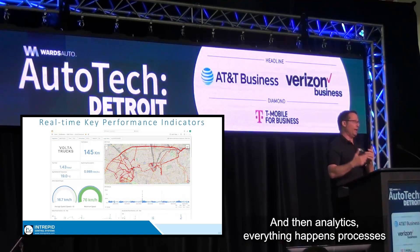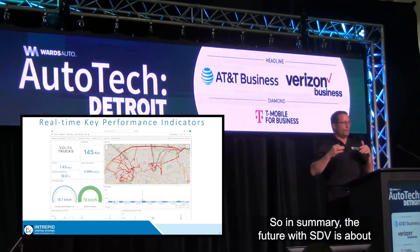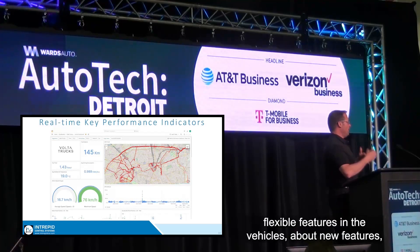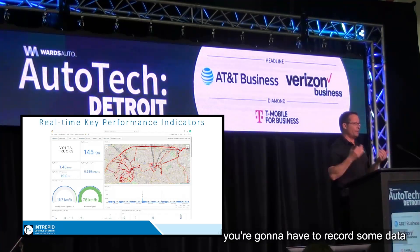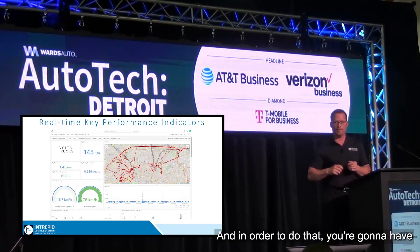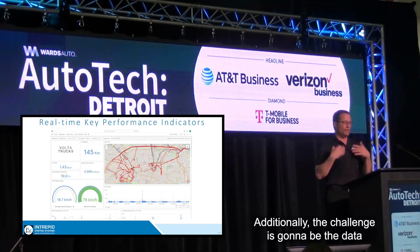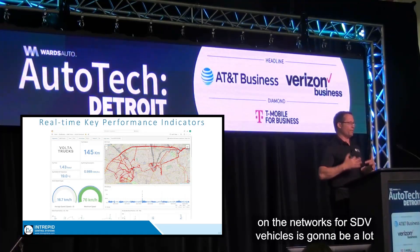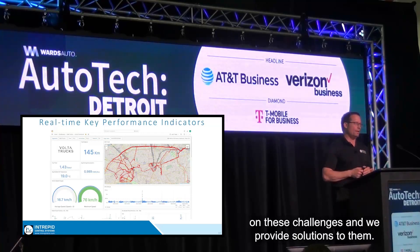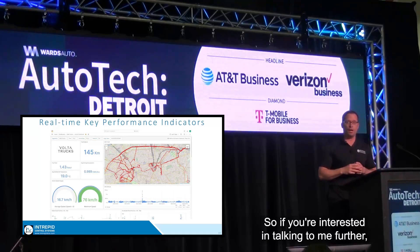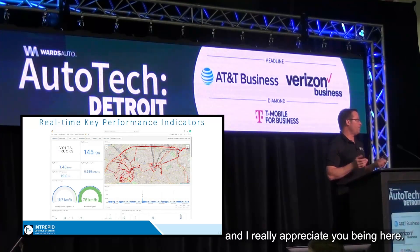In summary, the future with SDV is about flexible features in the vehicle — deploying new features post-production. To make sure those features are the right ones, you're going to have to record data and have a more flexible analytics and data logging system than what is traditionally deployed. The challenge is that data on networks for SDV vehicles is going to be a lot higher than what we're accustomed to today. We're focused on these challenges and provide solutions. If you're interested in talking further, our booth is right there — Trumpet Control Systems. Thank you for your time.